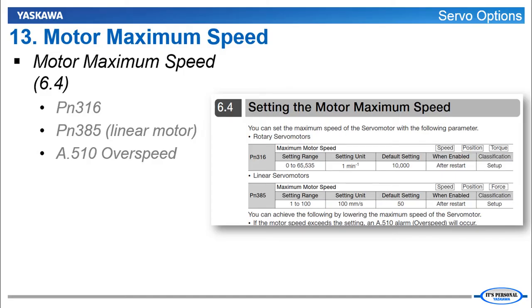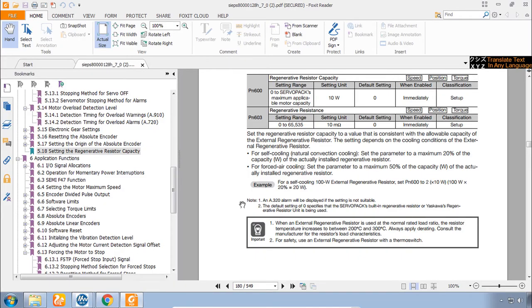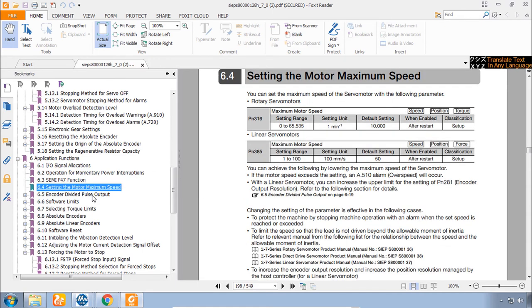Another new feature of Sigma 7 is the ability to limit the motor's speed. And this applies now to not just torque mode but also speed and position mode. with one parameter in RPM. Min minus 1 means RPM for rotary motors. And another parameter for linear motors in millimeters per second. It's a pretty straightforward parameter in section 6.4. If you exceed the speed in this parameter you get the alarm A.510 over speed alarm.